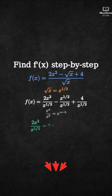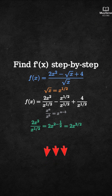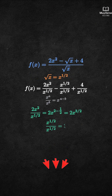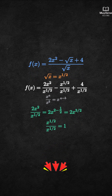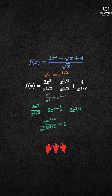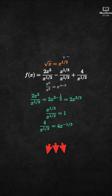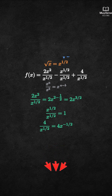For the second term, x to the 1 half over x to the 1 half equals 1. For the third term, 4 over x to the 1 half equals 4x to the negative 1 half. So the simplified function is f of x equals 2x to the 3 halves minus 1 plus 4x to the negative 1 half.